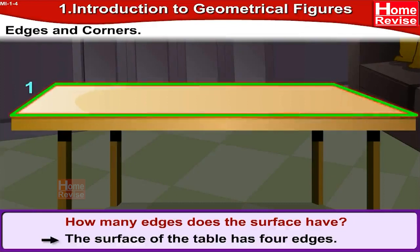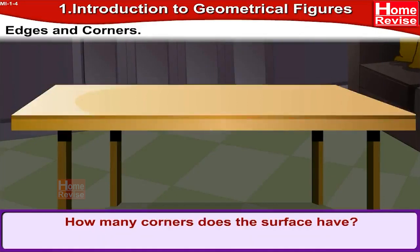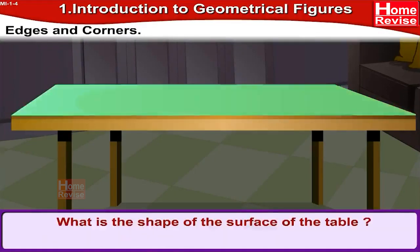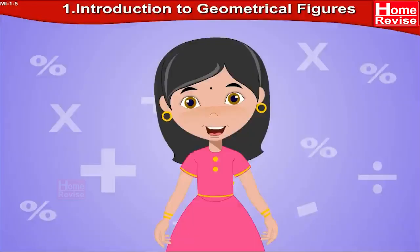That's correct — the surface of the table has four edges: one, two, three, and four. How many corners does the surface have? Very good, you're right — it has four corners: one, two, three, and four. Now the last question — it is very easy. What is the shape of the surface of the table? You are correct, it is rectangular in shape — it is a rectangle.